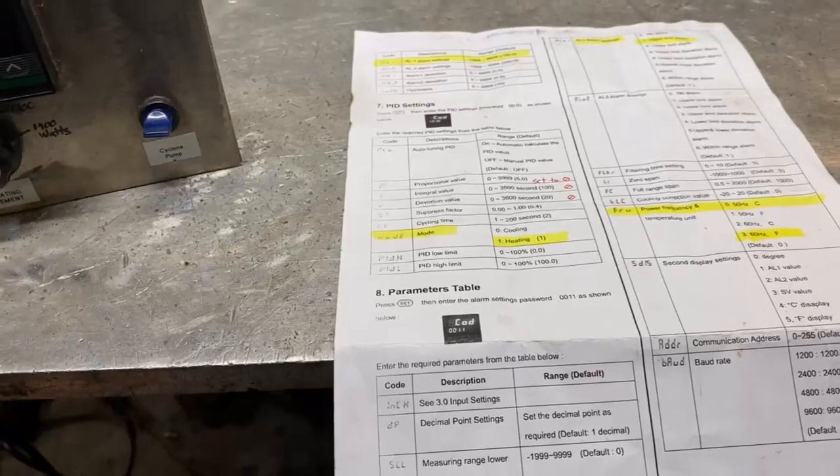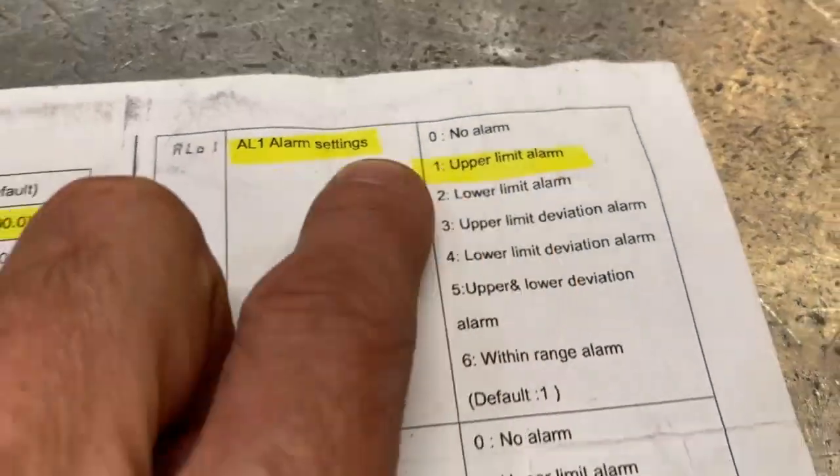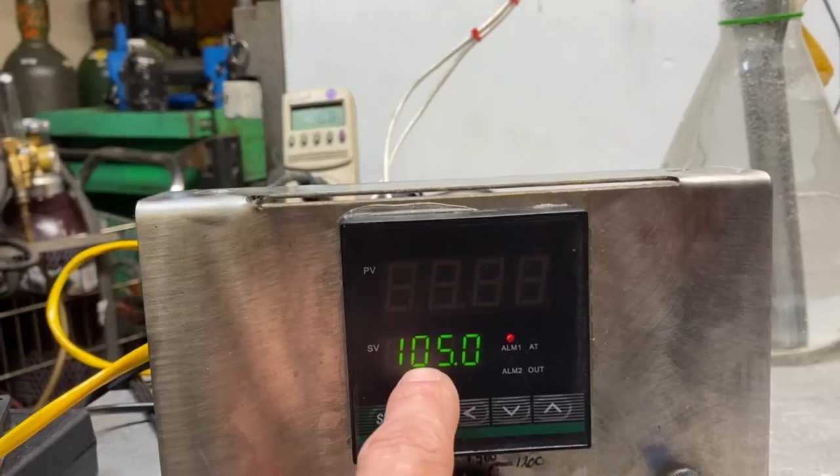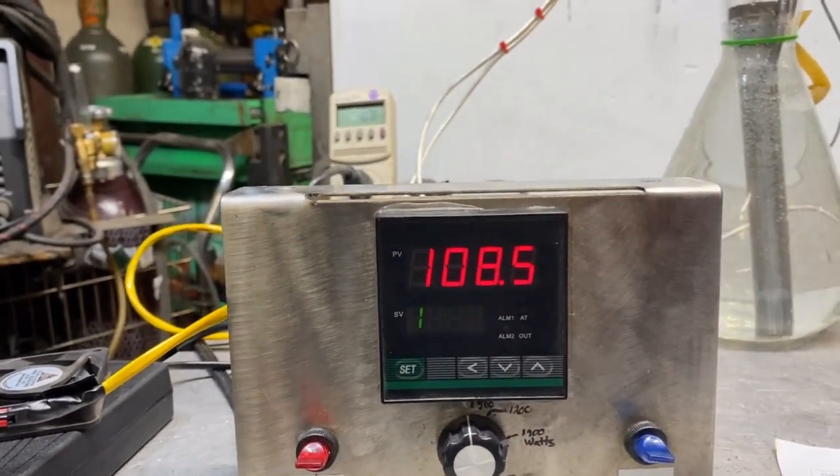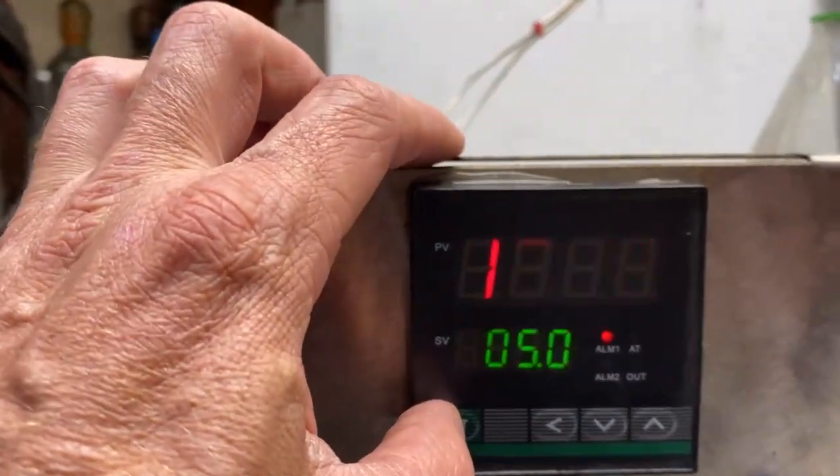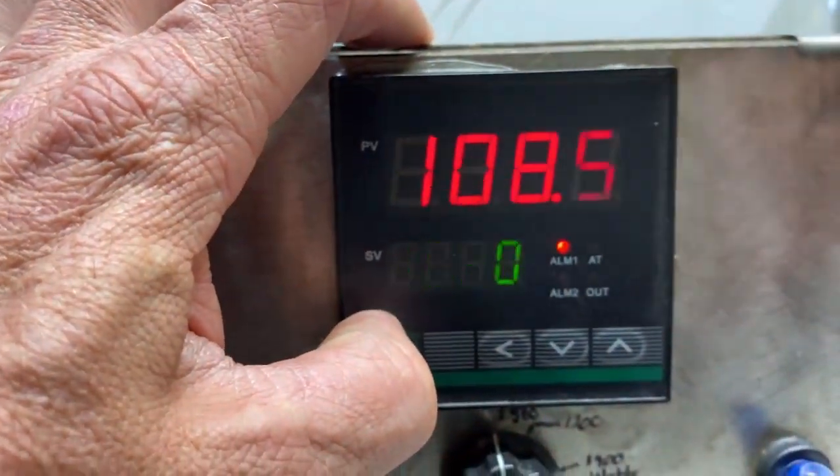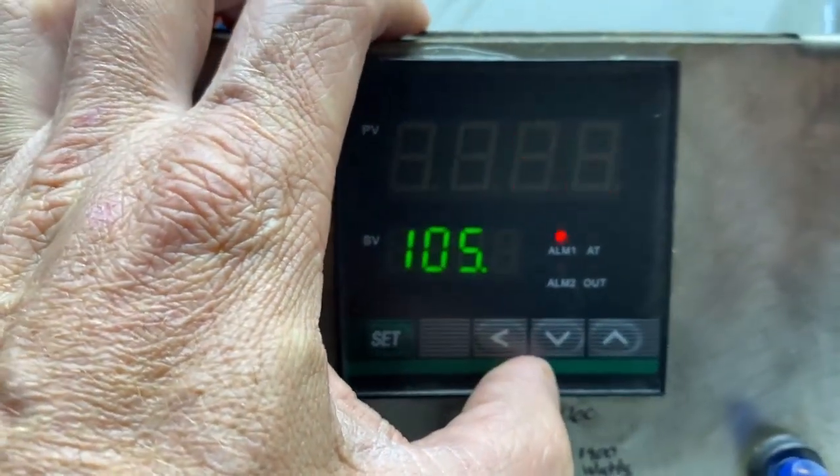Now, there is another setting on your particular unit - the alarm. And anytime you change the process value, you need to change the alarm value. Let's, for example, say we want to change the process value to 110 degrees. To do that, you press the set button and hold it until this happens.